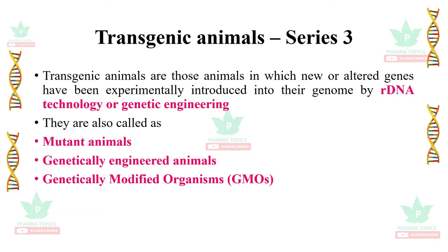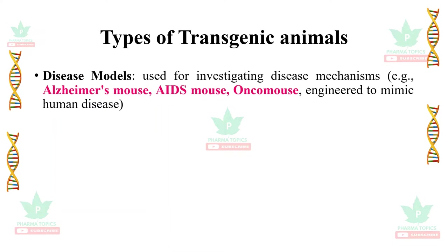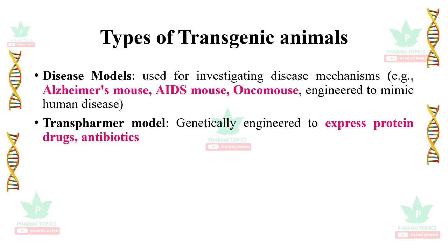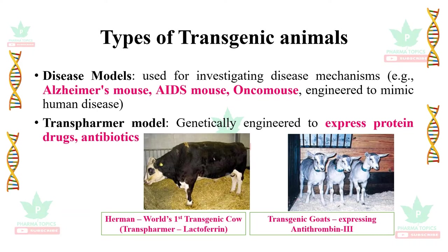They are also called mutant animals, genetically engineered animals, or genetically modified organisms. The types of transgenic animals are: disease models, used for investigating disease mechanisms — examples include Alzheimer's mouse, AIDS mouse, and Honco mouse — which are engineered to mimic human diseases. Then transformer models, genetically engineered to express protein drugs and antibiotics.